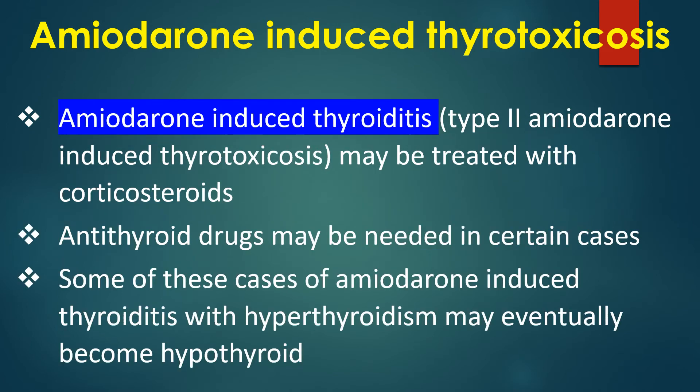Amiodarone-induced thyroiditis may be treated with corticosteroids; antithyroid drugs may be needed in certain cases. Some cases of amiodarone-induced thyroiditis with hyperthyroidism may eventually become hypothyroid.